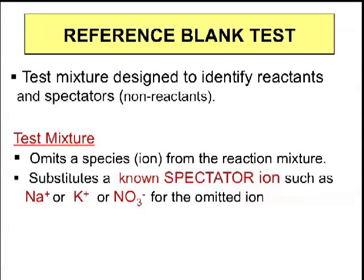You need to begin to know that family 1A metal ion cations, all charged plus one, are highly soluble. It takes unusual conditions to get them to come out of solution. So if you remove a species, we're going to substitute something from family 1A if it's a cation.